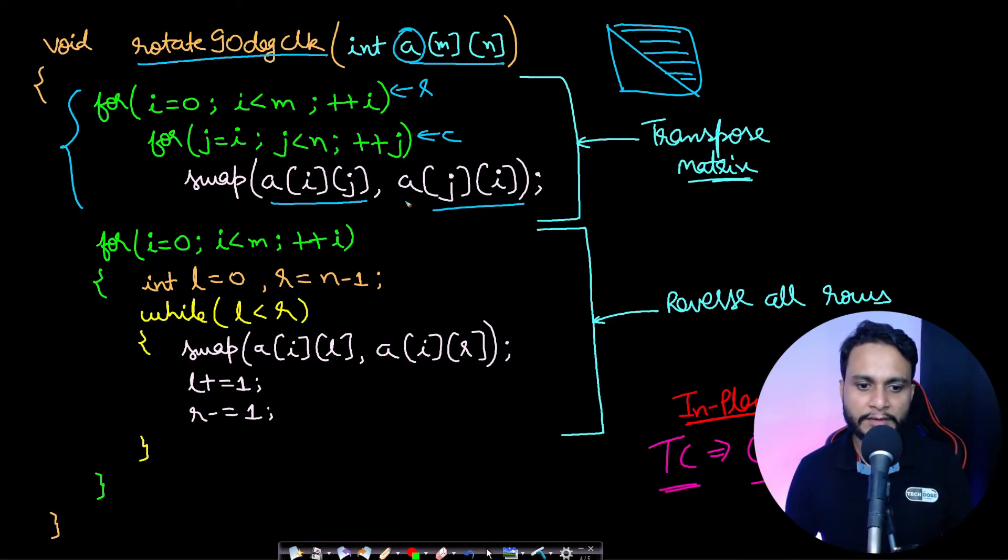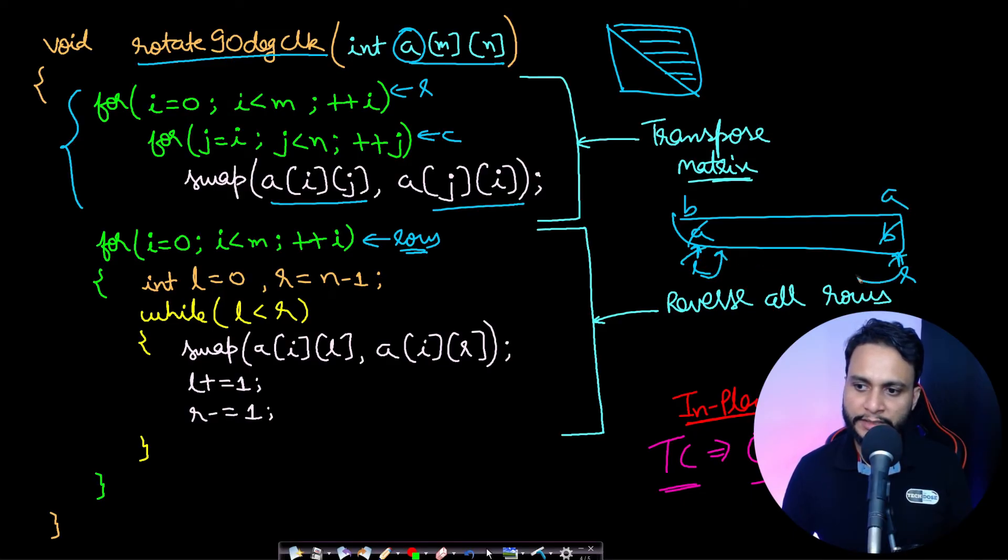Once this is done, we can just iterate over all the rows. So this is for the rows, one row at a time. And then if this is the given row, then I can take a left pointer and a right pointer using the two-pointer technique, and I can swap this value A with B. I can swap this value, and then I can increment the left pointer and I can decrement the right pointer. And again, whatever is the next value, they can be swapped as well. And this will continue until this left becomes greater than or equal to your R.